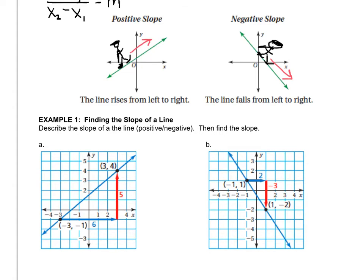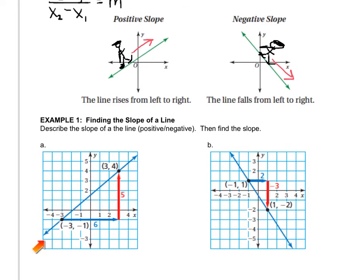So if you look at letter A, that line is going up from left to right. It looks like this positive line. So when we describe the slope of the line, that's positive.